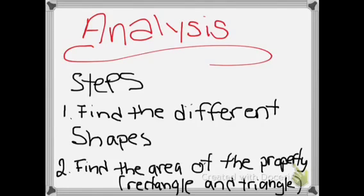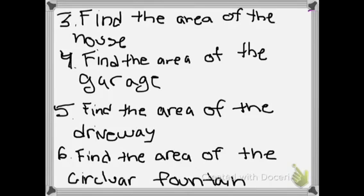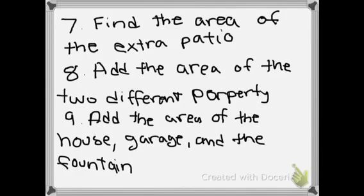Analysis steps: Step 1 — find the different shapes. Step 2 — find the area of the property, triangle and rectangle. Step 3 — find the area of the house. Step 4 — find the area of the garage. Step 5 — find the area of the driveway. Step 6 — find the area of the circular fountain.